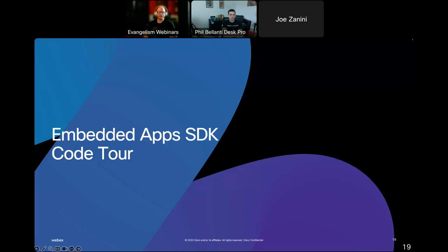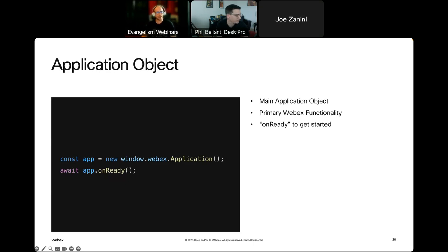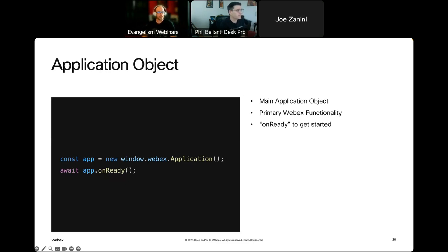Now for the fun part — let's dive into some SDK code. The application object is your main interface into embedded apps and WebEx. You create a new instance of the WebEx application after pulling in the SDK. Then you call the 'onReady' function and await that promise to resolve. Once it resolves, the SDK alerts you that it's communicating with the WebEx application — we're ready to go, all the WebEx user data is populated in the SDK, and you can start your application processing.